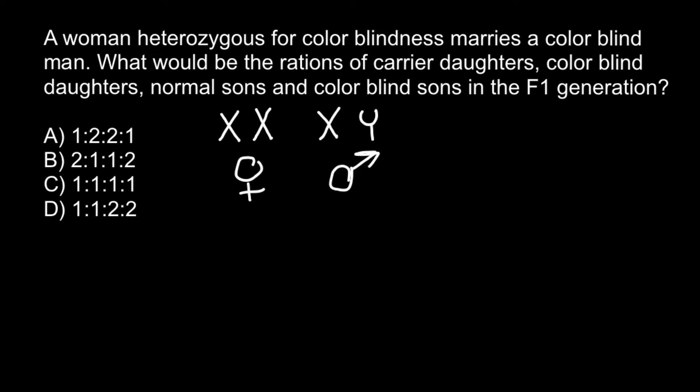Let me use green color to designate a normal chromosome and red color to designate a defective chromosome. We were told that the male has a defective X chromosome — he has colorblindness and his only X chromosome is defective. Not the whole chromosome is defective, but only one gene on it. The female is heterozygous, meaning one X chromosome is normal and the other X chromosome is defective.